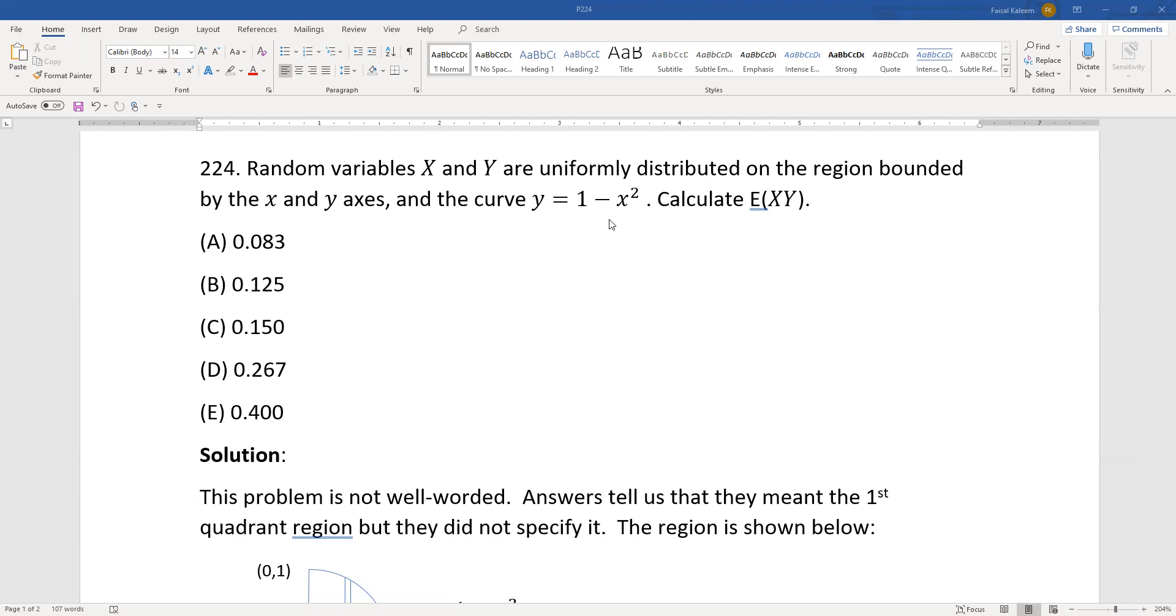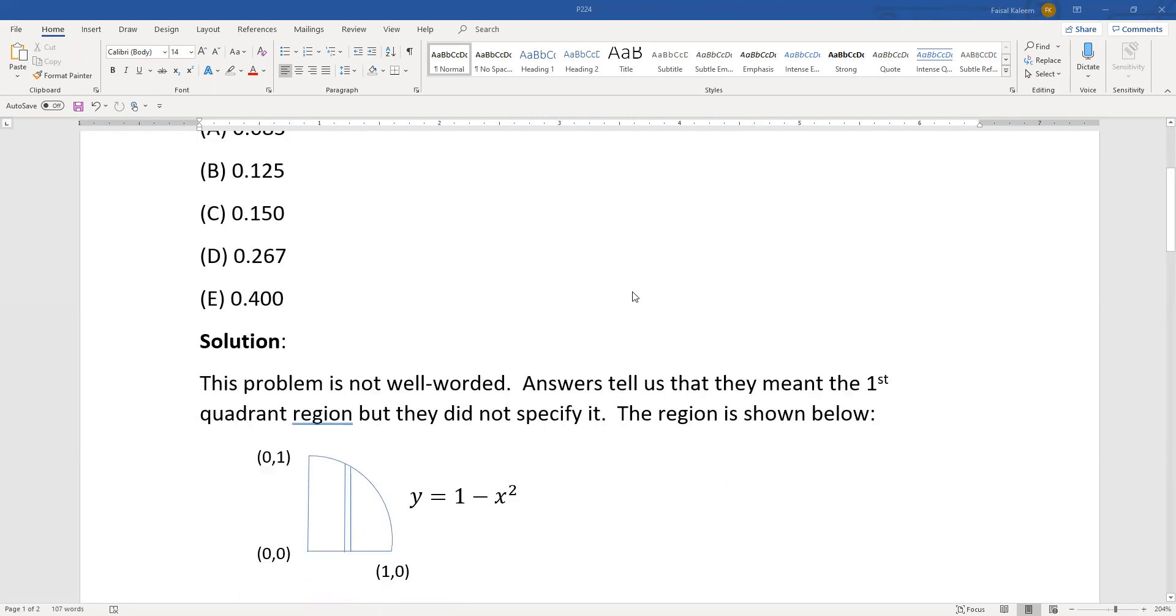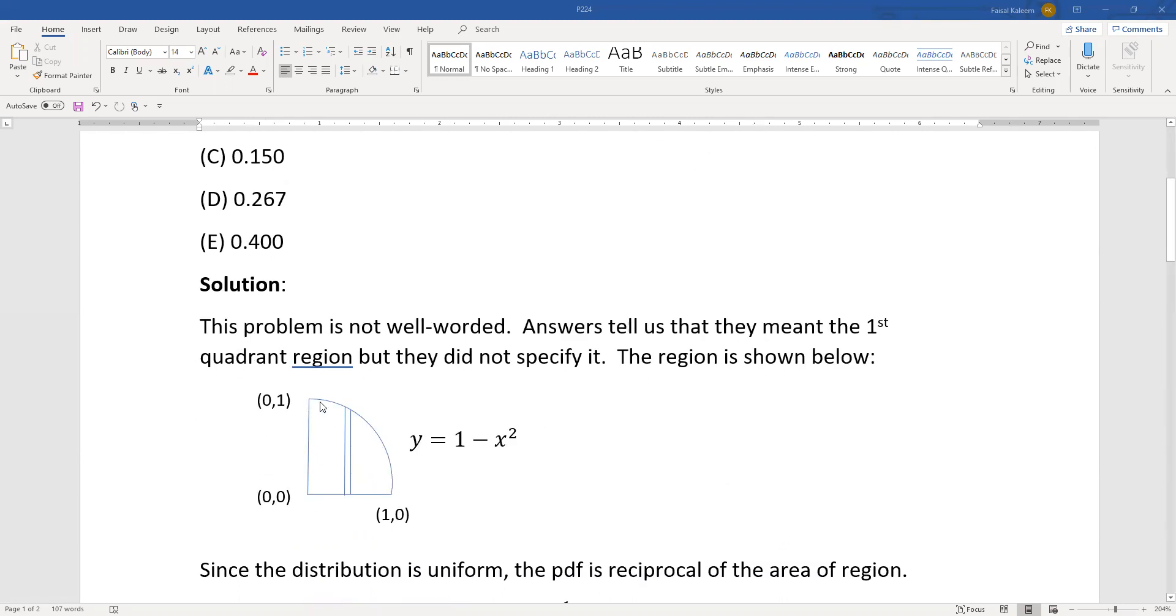First of all, this is not a well-worded problem because there could be two regions which satisfy these conditions that they're bounded by x and y-axis and y equals 1 minus x squared. So y equals 1 minus x squared would be a curve like that.